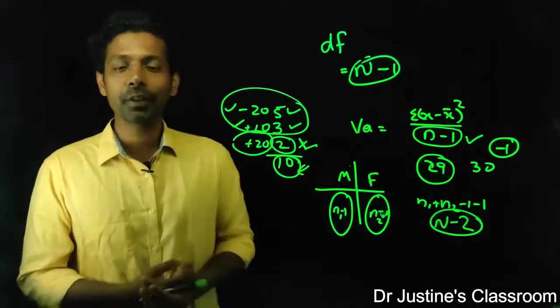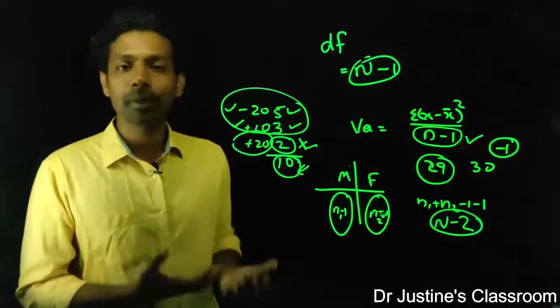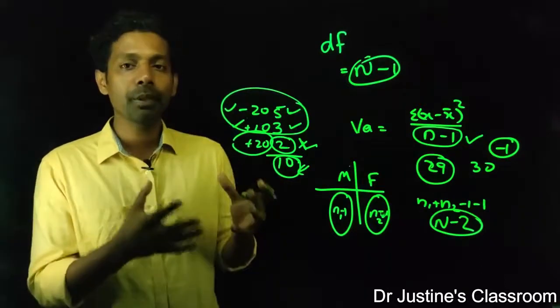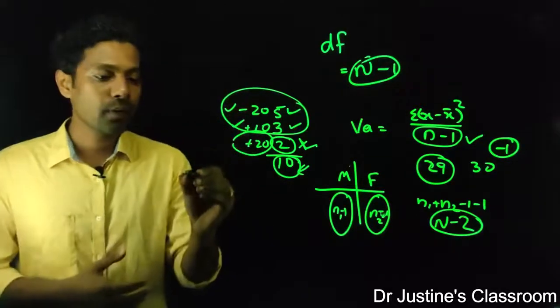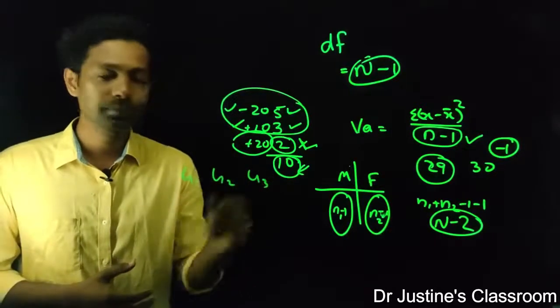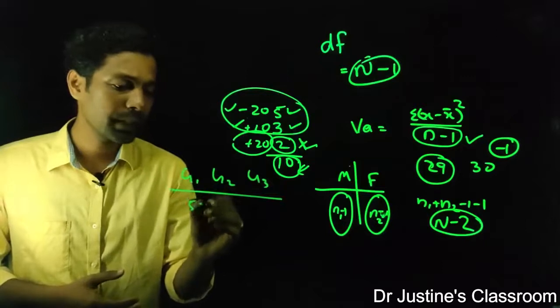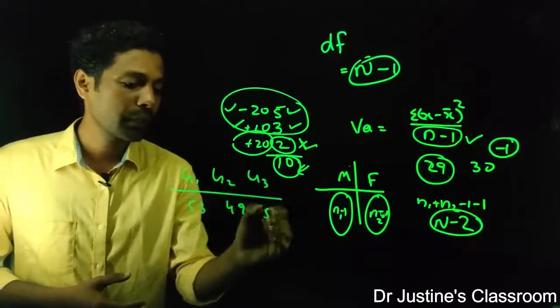There are different kinds of degree of freedom when you talk about ANOVA. The common first one is between group variance. So what is the between group variance? That means I have group 1, group 2, and group 3, and I have means for this data: let's say 53, 49, and 52.